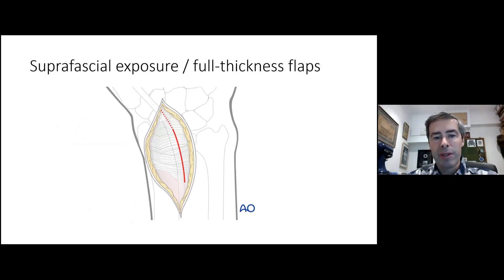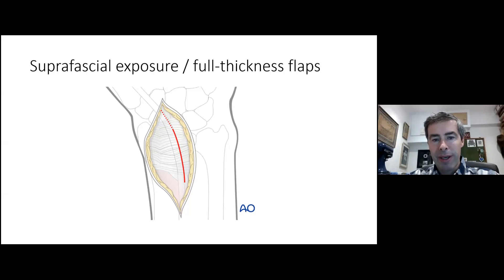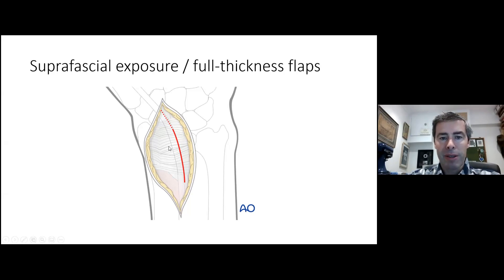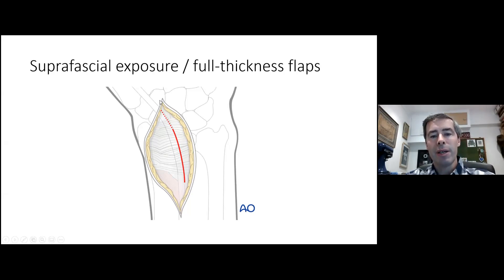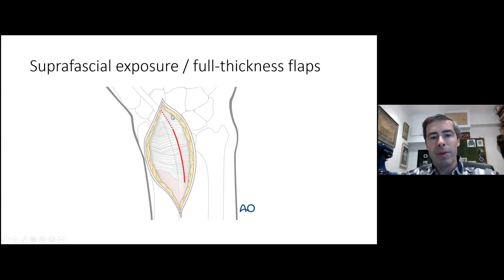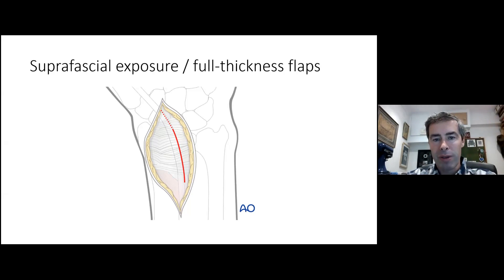First, raise full-thickness suprafascial skin flaps, leaving everything in their compartments — raising skin and fat off the fascia in both directions. As you run your knife along the fascia radially, you'll see the superficial radial nerve branches running in the undersurface of your flap, so you can be sure the nerve is protected. The bigger the exposure, the better you'll protect your nerve. On the ulnar side, the dorsal sensory branch of the ulnar nerve runs on the ulnar side of your fascial flap.